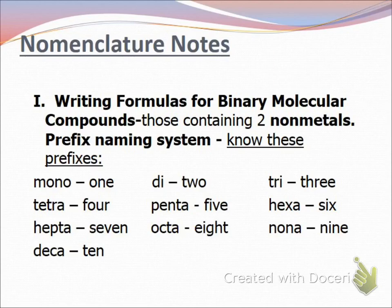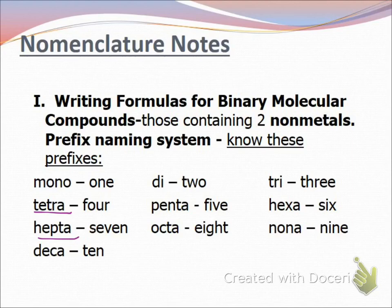The ones that kids have the most trouble remembering — because they don't connect with their geometry — are tetra and hepta. They want to say quad for 4 and then they don't even know what 7 is most of the time. So you're just going to have to memorize these. The first part is: how do we write a formula when we are given the name? Let's do that on the next slide.